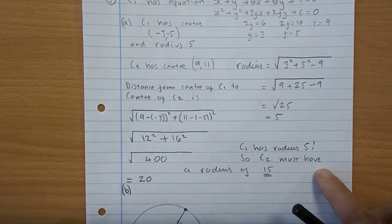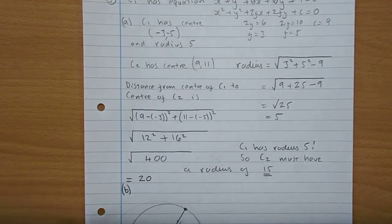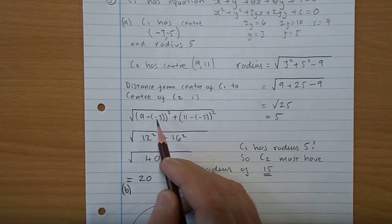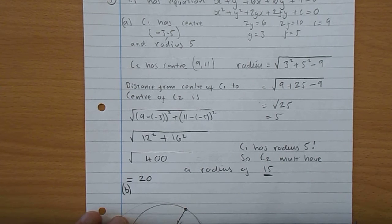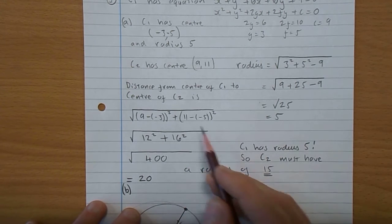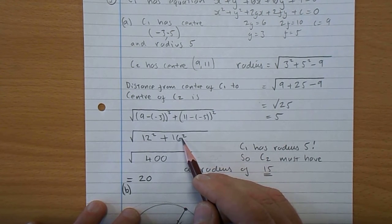Back we go. Right. So we want the distance. So the distance from the x coordinate of C2 to the x coordinate of C1 is 9 take minus 3. That's 12. The distance from the y coordinate of C2 to the y coordinate of C1 is 11 take minus 5. That's 16.